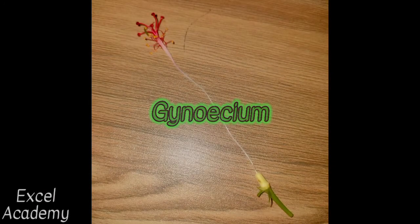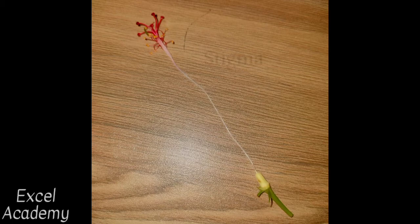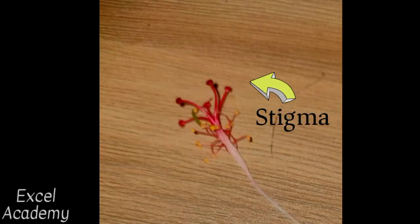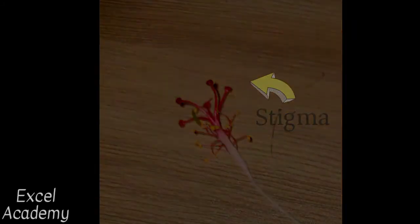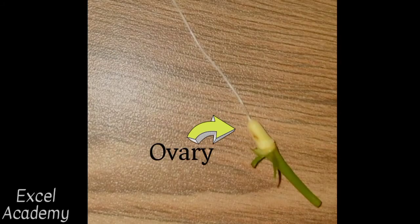Gynoecium. The female part of the flower has three parts: the stigma, the style, and the ovary. The stigma is the upper or head part of the structure which receives pollen and begins the process of fertilization. The style is the stalk portion which gives space to the pollen tube to reach the ovary. The ovary is the base of the structure which holds the ovules awaiting fertilization.